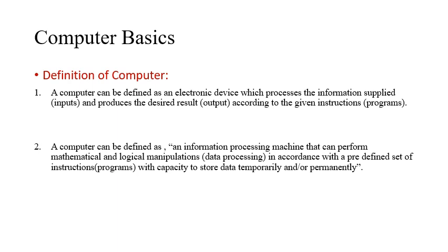Another definition of computer is that it is an information processing machine. It is used for the purpose of mathematical as well as logical manipulations — it can solve all these kinds of operations, but with the help of a set of instructions only. It also contains the capacity to store data temporarily or permanently.